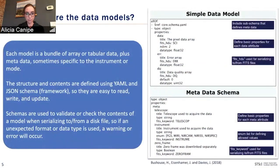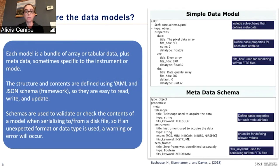In short, data models make it much easier to work with JWST data. Each model is essentially a bundle of array or table data plus some metadata, and is often specific to the instrument or mode. The structure and contents are defined using YAML and JSON schema, making them easy to read, write, and update. The framework is used to validate or check the contents of the model when reading in a file, so if you have an unexpected format or data type it will warn you before you get too far into trying to put your data into the software.